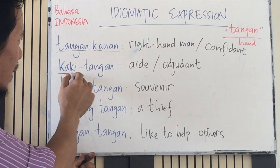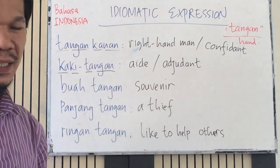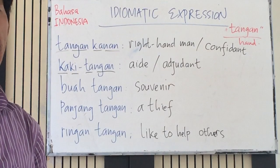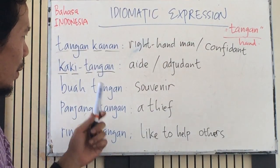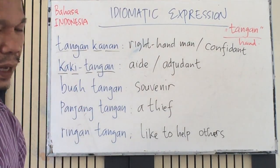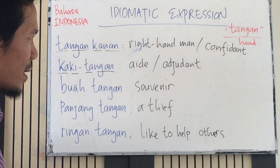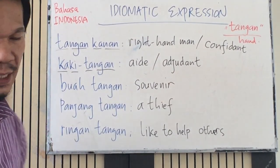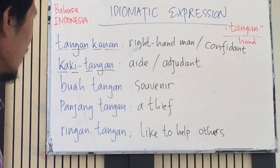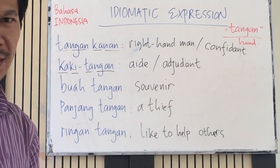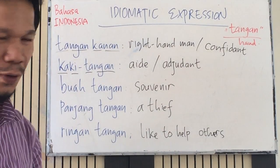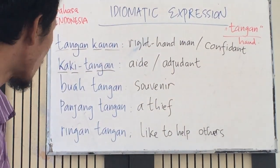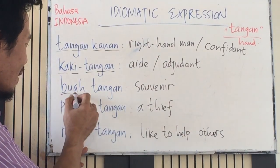Similarly, 'kaki tangan' means an aide or adjutant — a person who replaces someone's action to do important tasks. Tangan kanan and kaki tangan are a bit similar in meaning. The third expression is 'buah tangan.'